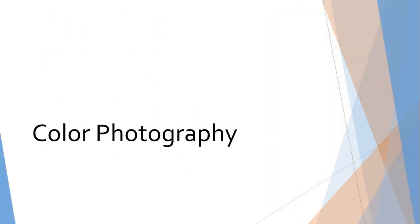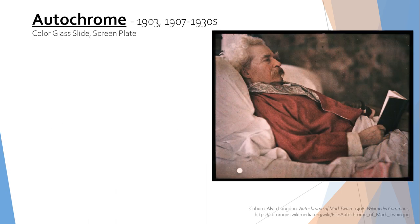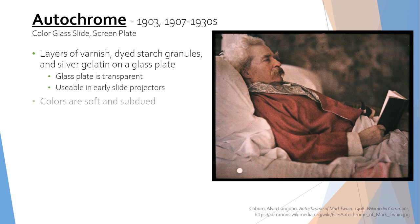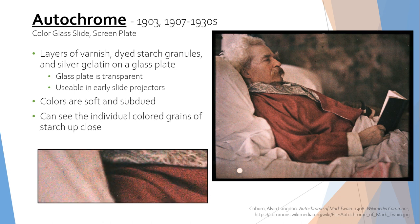The next section is color photography, in which the color is a part of the development process and not added afterwards. The autochrome method was invented in 1903 and was commercially used from 1907 to the 1930s. Autochromes consist of layers of varnish, starch granules that have been dyed various colors, and a silver gelatin on a glass plate support. The glass plate is uncolored, making the photograph partially transparent. This also makes autochromes usable in early iterations of slide projectors. The colors are soft and subdued, and it may be possible to see the individual colored grains of starch up close or under a magnifying glass, giving the image a speckled appearance.